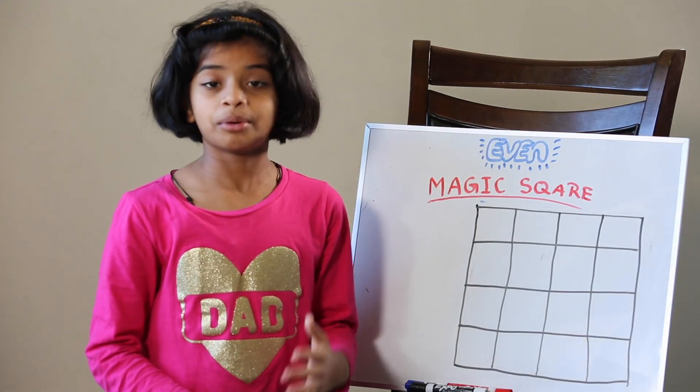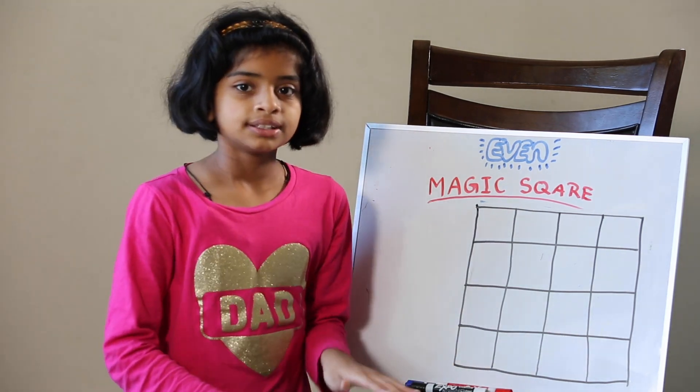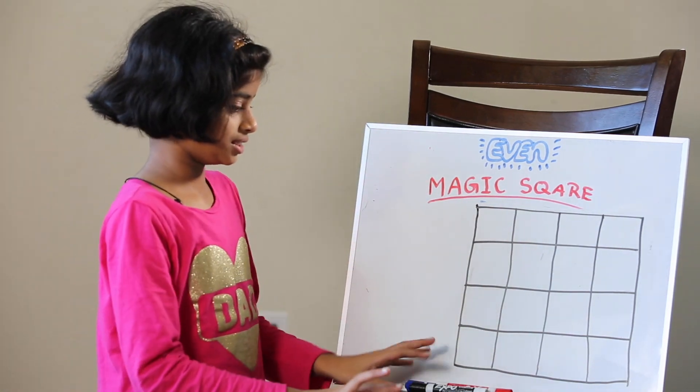So as in my previous video about magic squares we learned how to do the magic square in three steps. Similarly we're going to learn how to do an even magic square in three steps too.